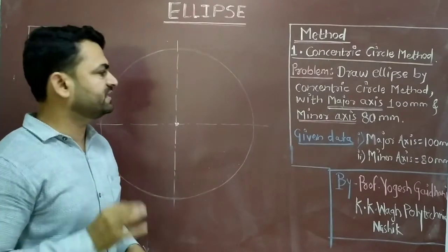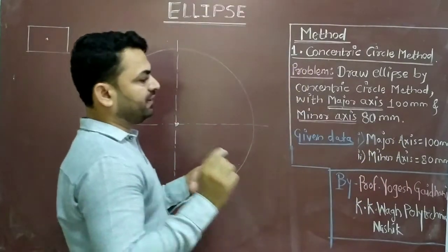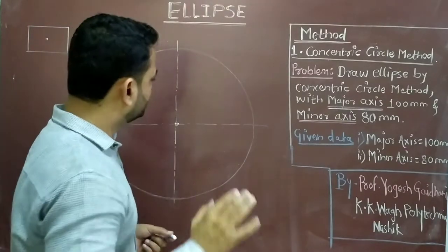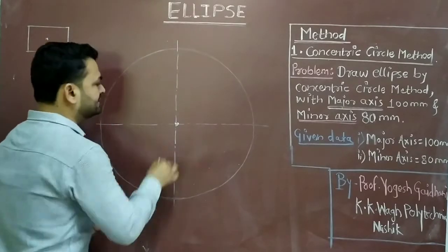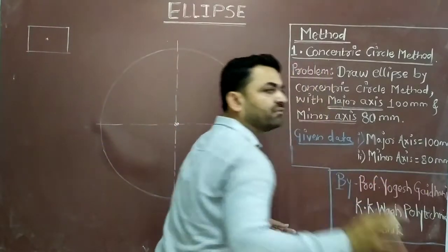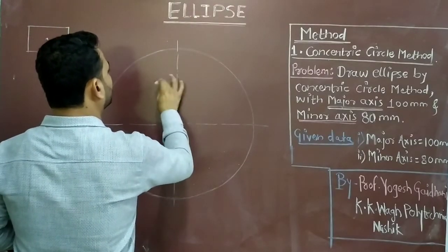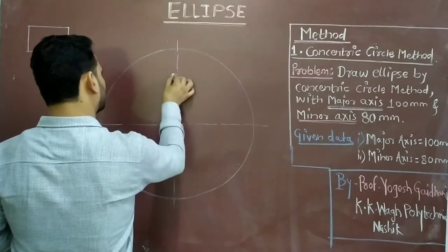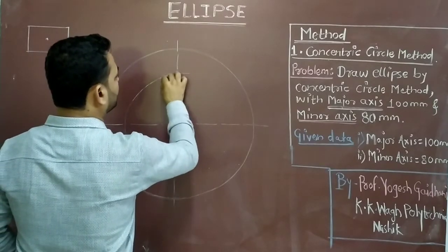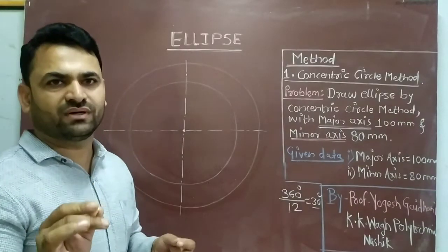The second input is the minor axis, which is given as 80 mm. So again we have to take half of the distance — half of 80 will be equal to 40. Take 40 mm distance in compass, using the same center point, and draw another circle. Now let's move towards step number two.